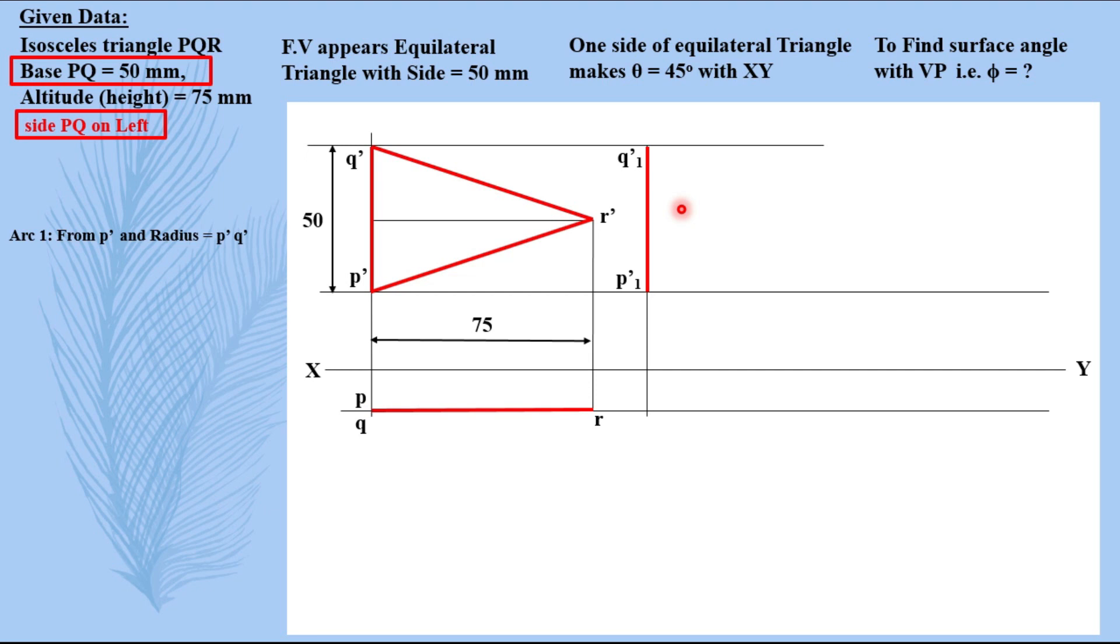Now using compass P dash as your point and P dash Q dash in your compass. Equilateral triangle has all the three sides same, here you have these two sides bigger than this one. Now you have to make all three sides equal. So you will take this distance in your compass, that is 50, put it on P1 dash and cut it. Again from Q1 dash to P1 dash, that is the same distance, keeping it here, cutting it and obtaining R1 dash. Joining this, then taking it down.